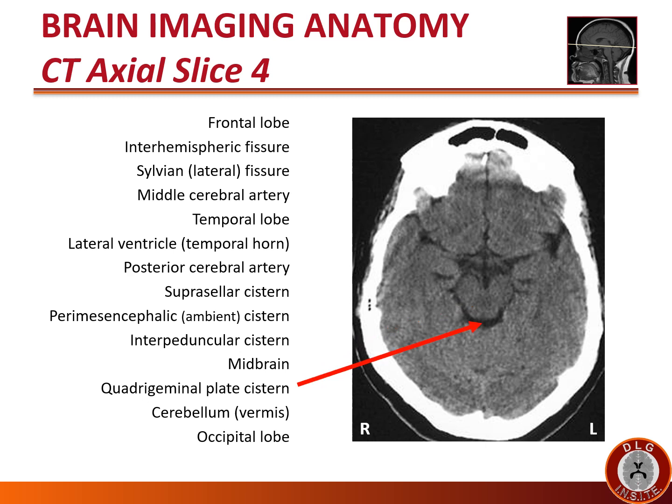Still at this level we see the CSF space dorsal to the midbrain called the quadrigeminal plate cistern. At this level we see the parenchyma right behind the midbrain and behind the quadrigeminal plate cistern — that's still part of the cerebellum. The central part of the cerebellum is called the vermis, which literally in Latin means 'worm.'